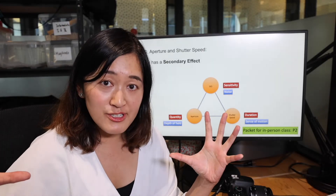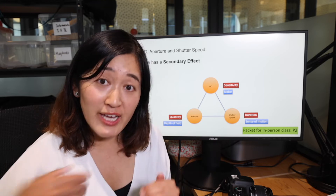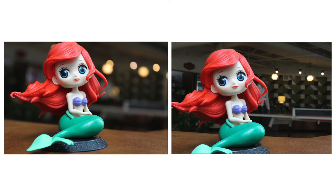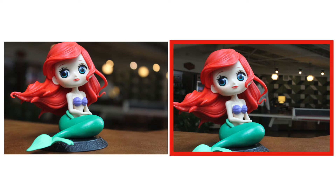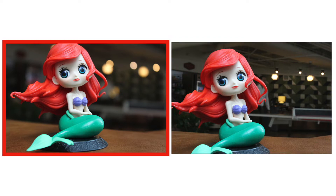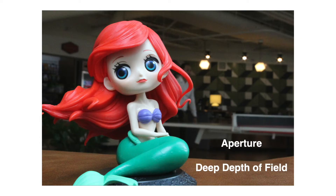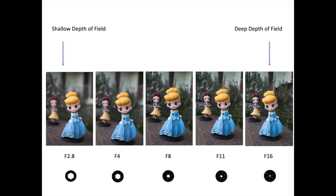For aperture, every time when you widen the aperture you're letting in more light, and when you narrow it down you're cutting off the light. But at the same time, you're changing the depth of field. One picture has a blurred background — in photography we call that shallow depth of field — and the other has a clearer background, which we call deep depth of field. The wider the aperture, the more blurred the background, meaning the shallower the depth of field. Every time you widen the aperture, you let in more light, but you also create a shallower depth of field.